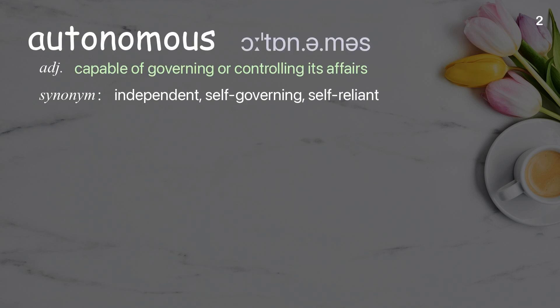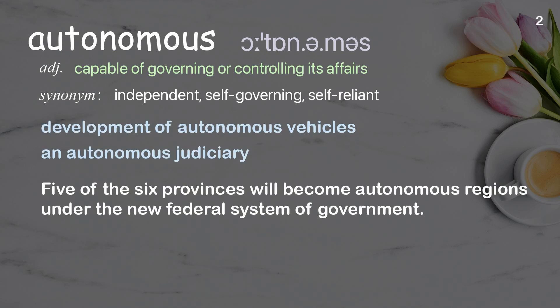Autonomous: capable of governing or controlling its affairs. Examples: development of autonomous vehicles, an autonomous judiciary. Five of the six provinces will become autonomous regions under the new federal system of government.